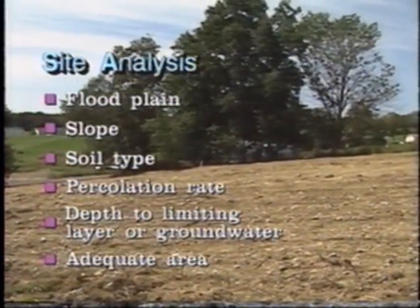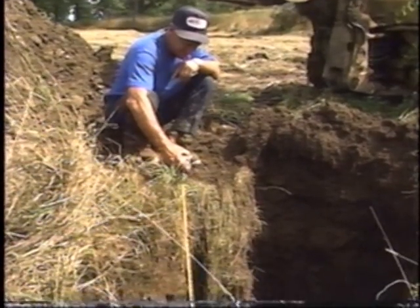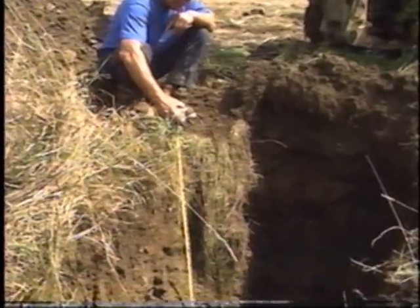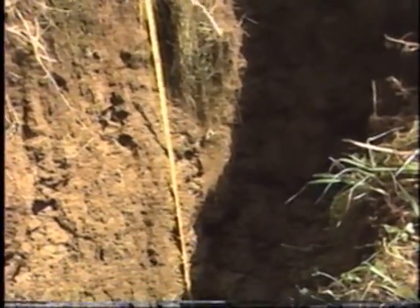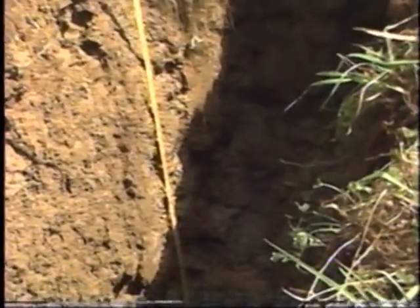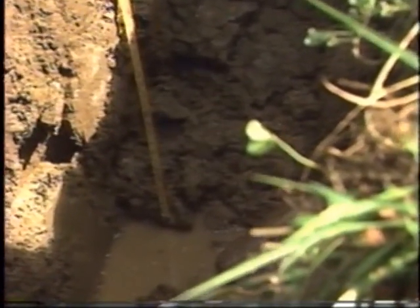The site analysis also determines if there is adequate area for the drain field and reserve drain field. A deep hole test is a hole dug by a backhoe. Typically, we want to see six or seven feet down into the ground. We have to see where the groundwater either is or periodically is, as the color of the soil tells us that. We have to keep the bottom of any septic system at least two feet above any groundwater or bedrock, which is treated the same as groundwater because it can shunt the wastewater into the groundwater very quickly without any treatment.